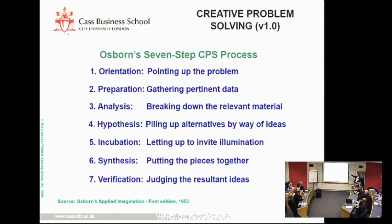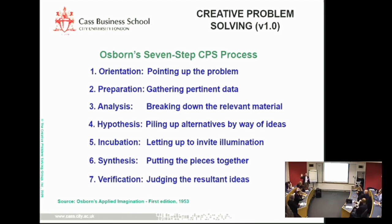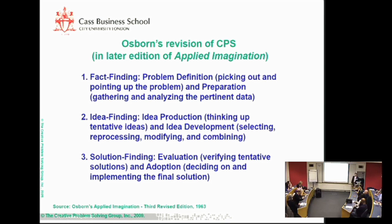Alex creates version one — the very first conception of creative problem solving. What do you notice about it? It's very sequential — it has numbers, which prescribes an order and sequence. A lot of it is about: what are we going to work on, let's come up with some ideas, and then let's evaluate them — but keep those two activities separate. Alex's belief was that people already knew how to analyze; they were already good at that. We had to help them come up with better ideas, especially in that social reality. That was his first publication in Applied Imagination in 1953. And by 1963, ten years later, his version had evolved to fact finding, idea finding, and solution finding.